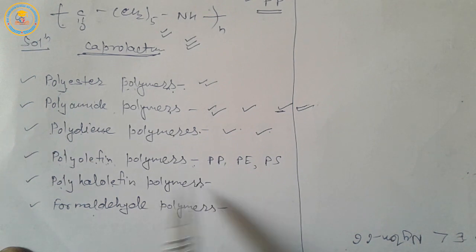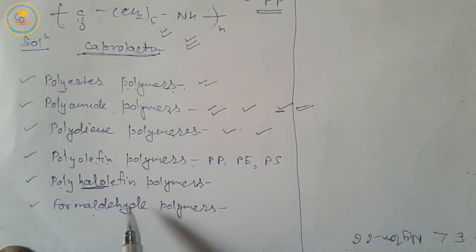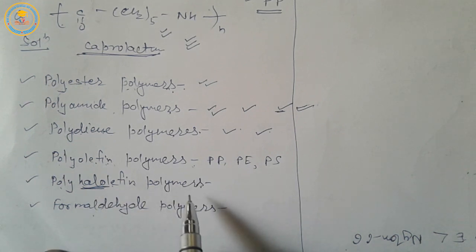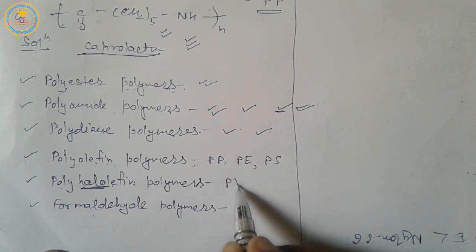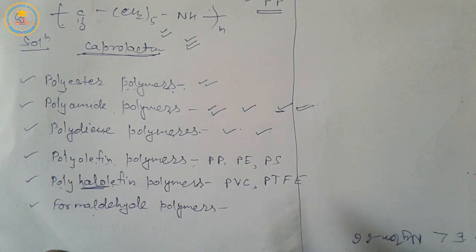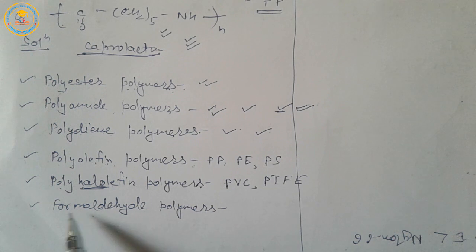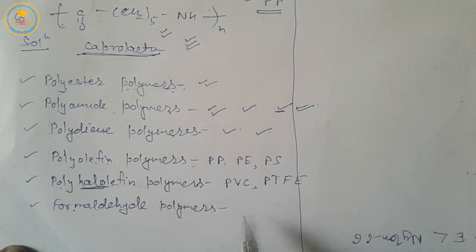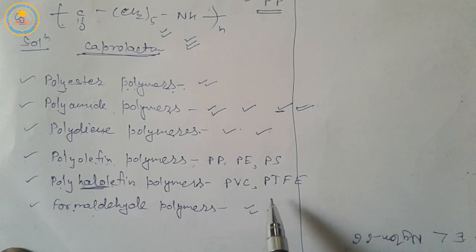Polyhaloolefin polymers have halogen atoms present in them. Examples of polyhaloolefin polymers are PVC and polytetrafluoroethylene (Teflon) — very important for competitive exams. Last, an important class is formaldehyde polymers: phenol-formaldehyde polymers and urea-formaldehyde polymers.